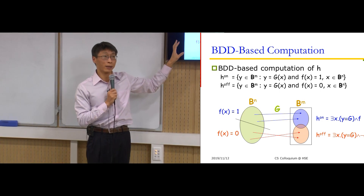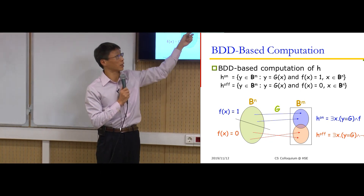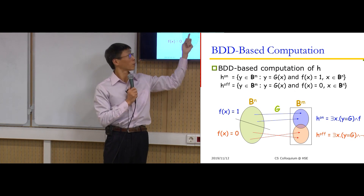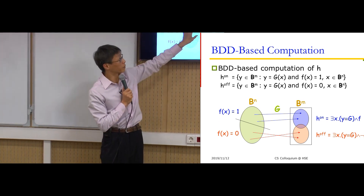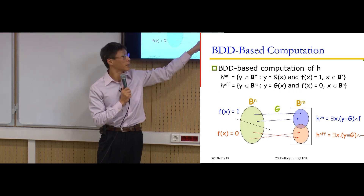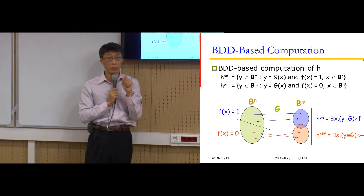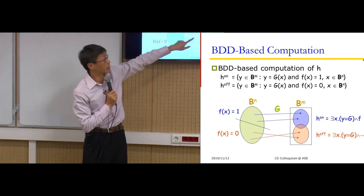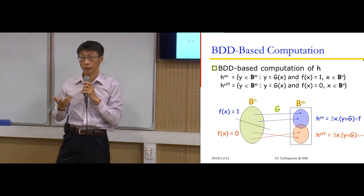There is a BDD-based computation approach. We project the input Boolean space into two parts: those making f true and those making f false. If we apply the image under the g-functions and project into the output space, and these two parts are disjoint, then h exists. If they overlap, there is no way to distinguish some input pairs mapped to the same g output, so we cannot determine the f value.